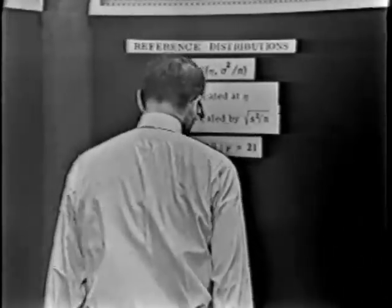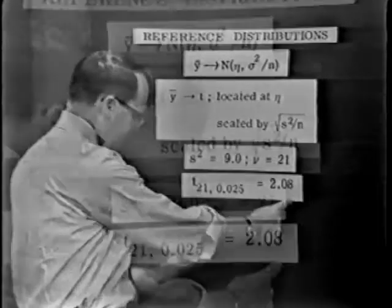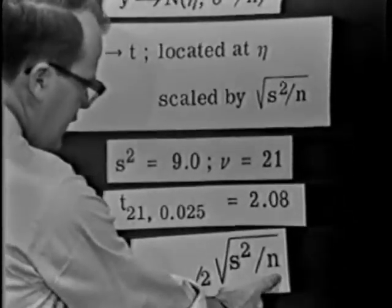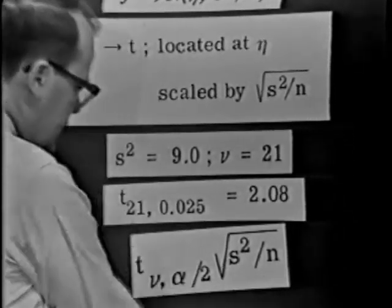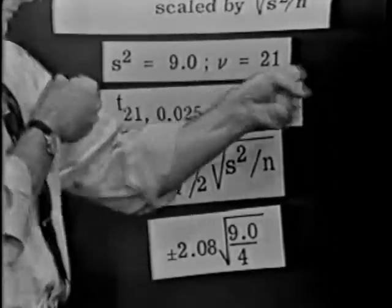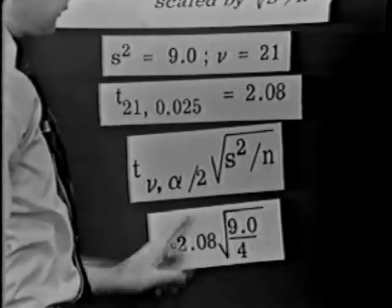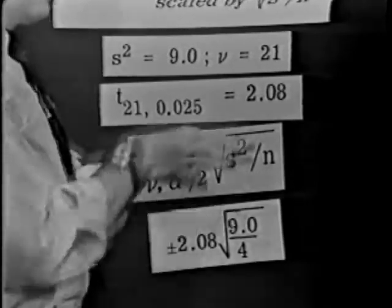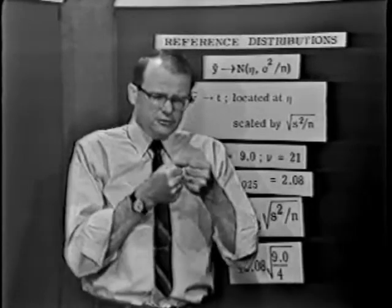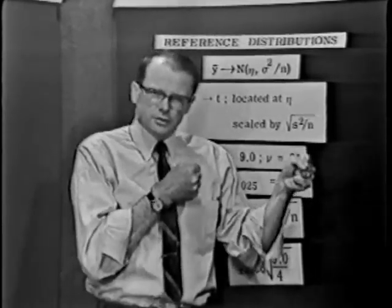So at any rate, 2.08 is our value. And so what I'm going to do now is take my critical value of t, which was equal to 2.08. It's a t with 21 degrees of freedom, and put it into this particular format. There's the critical value of t times the scaling factor. And if you do that, you'll get 2.08. And then you've got to scale it by the square root of s² over n, 9 over 4. And that will turn out to be plus or minus 3.12. So what I really will have now is a t curve. It looks like a normal. And the distance from the mean out to the point that leaves two and a half percent in the tail of the curve will be 3.12 units.